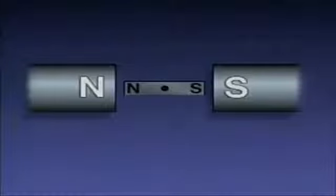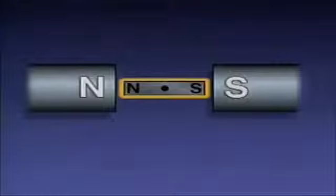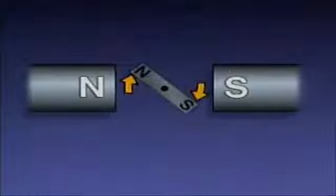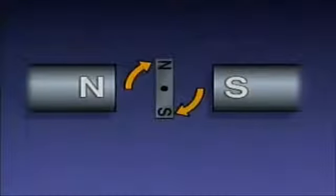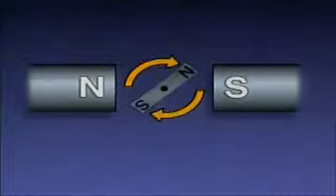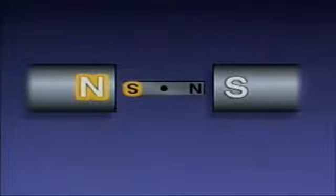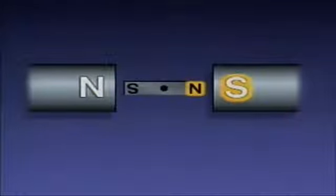A motor works because of the interaction of magnetic fields. In this simplified example, one field is produced by a bar magnet and a second field is provided by two permanent magnets. The interaction between the two fields produces a turning motion — they cause the bar magnet to turn. However, the movement of the bar magnet would stop when its south pole is next to the permanent magnet's north pole and its north pole is next to the permanent magnet's south pole, unless conditions change.